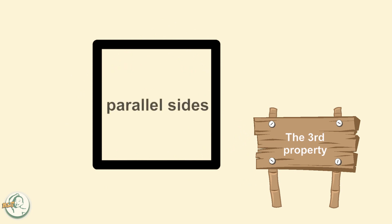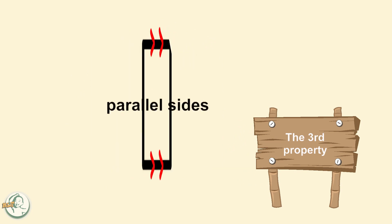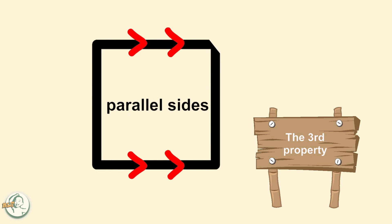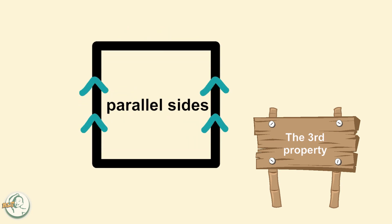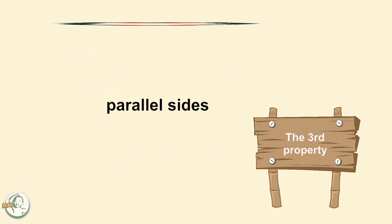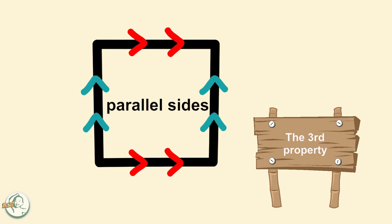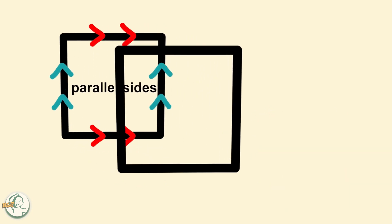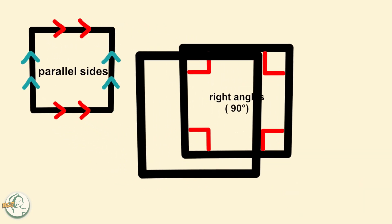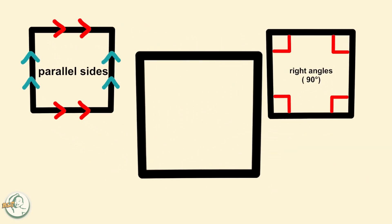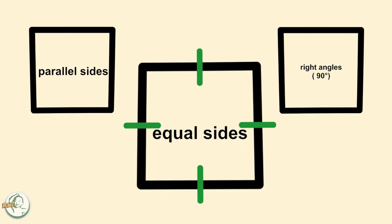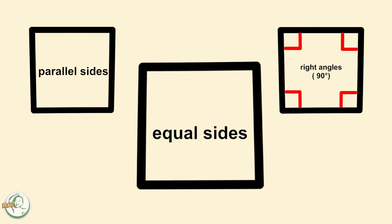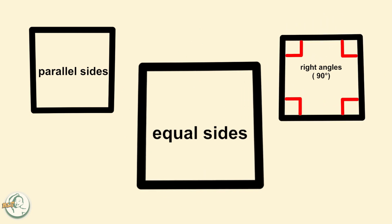The third property is that the sides of a square are parallel to each other. This means that the sides never intersect or cross each other. The fourth property is that the diagonals of a square are equal in length and bisect each other at right angles.